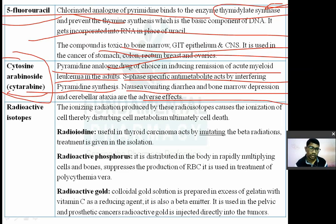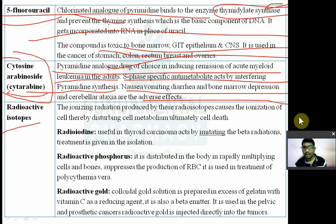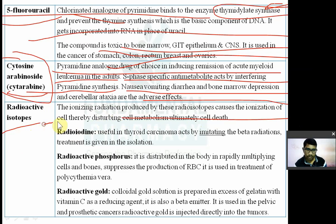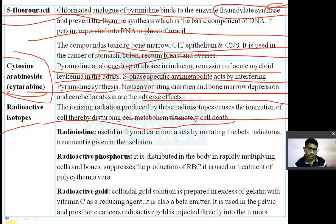The third category of anticancer drugs is radioactive isotopes. Ionizing radiation caused by radioisotopes causes ionization of the cell, thereby disturbing the cell metabolism, and ultimately the cell will die.